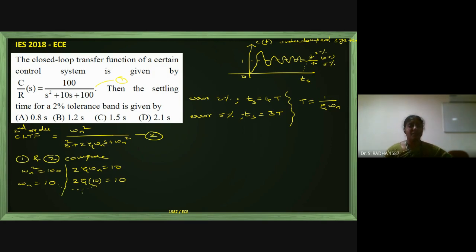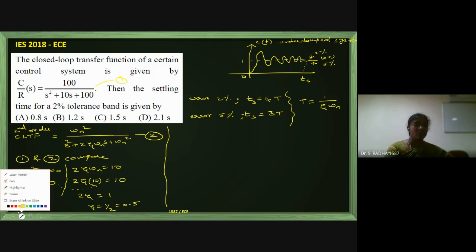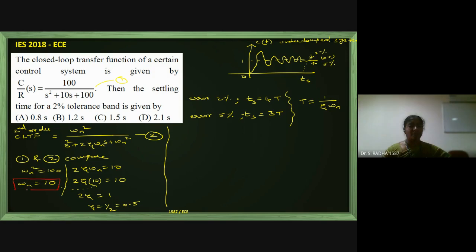Simplifying, 2η = 1, so η = 1/2 = 0.5. We have now calculated both η = 0.5 and ωn = 10.